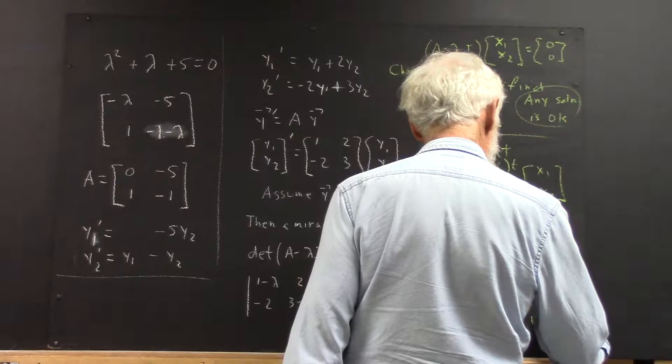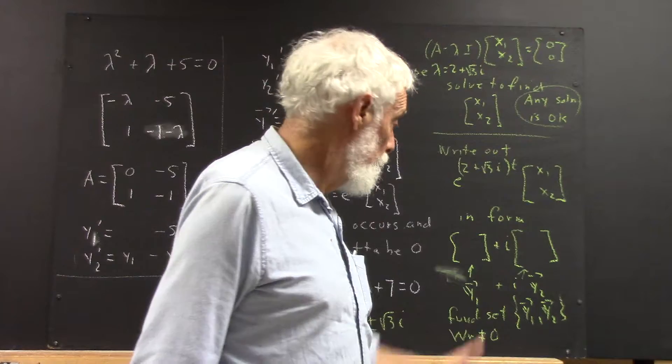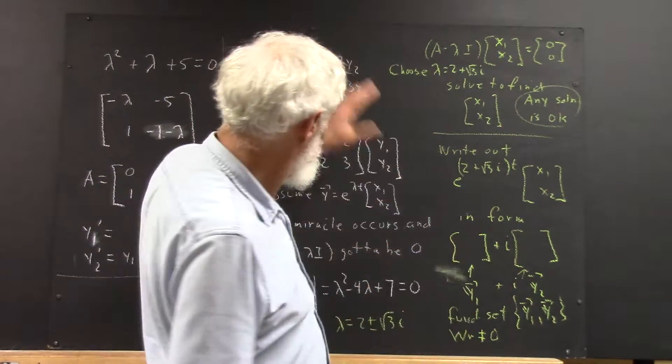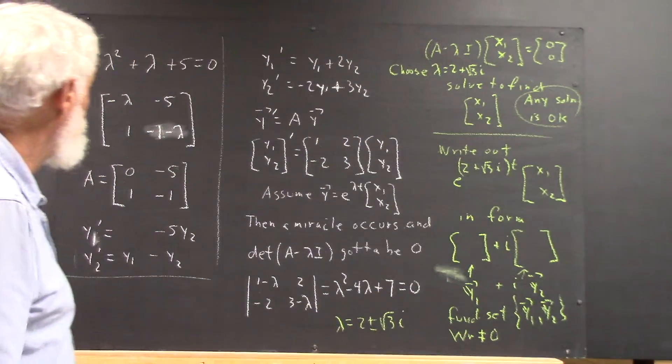And we check to make sure our Wronskian's non-zero. We've got two solutions. That's an outline of the process. We've gone through the details. You should be able to go through the details in this one, if necessary, looking back at the other one.